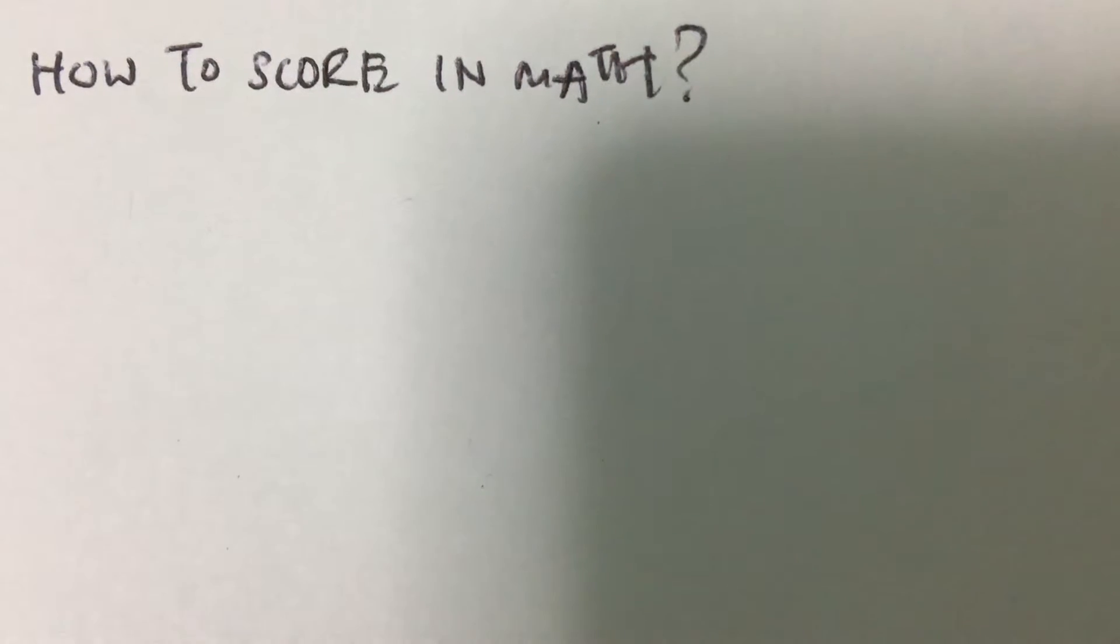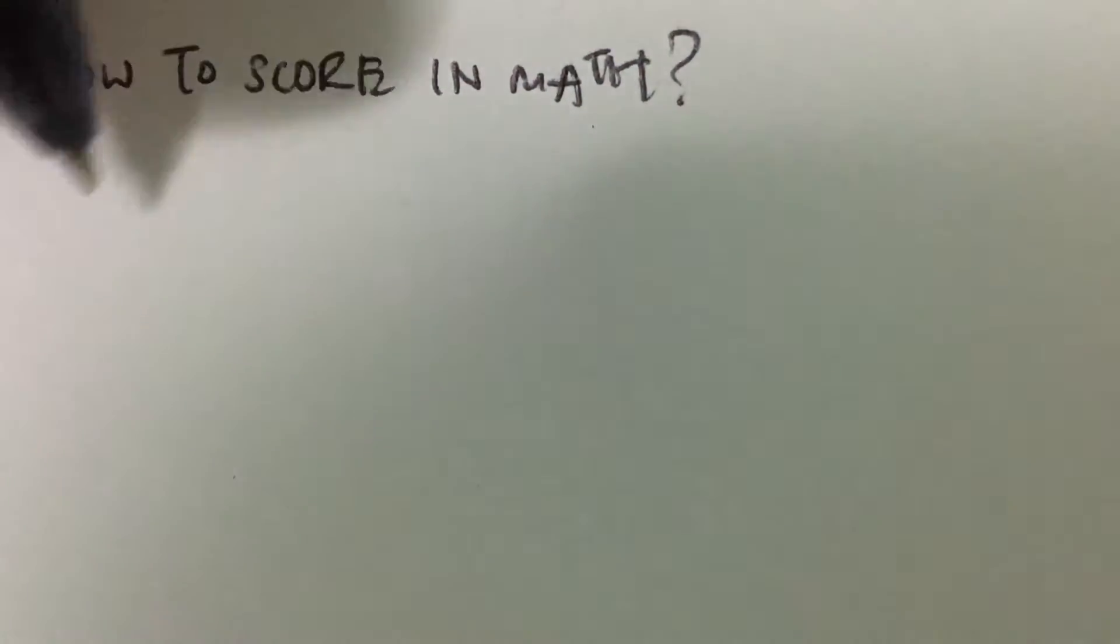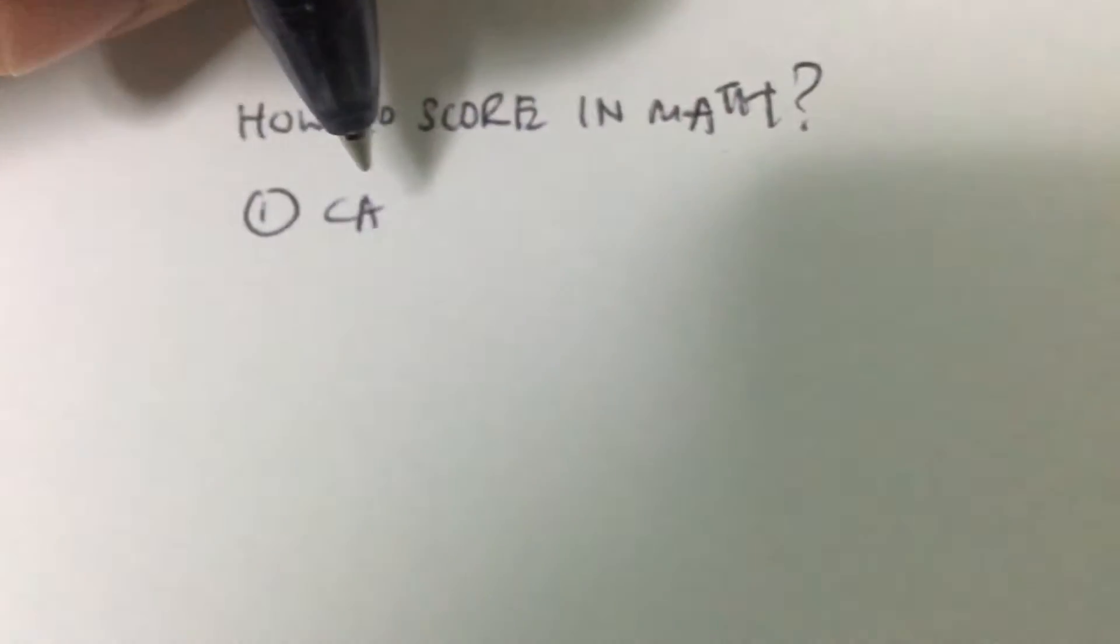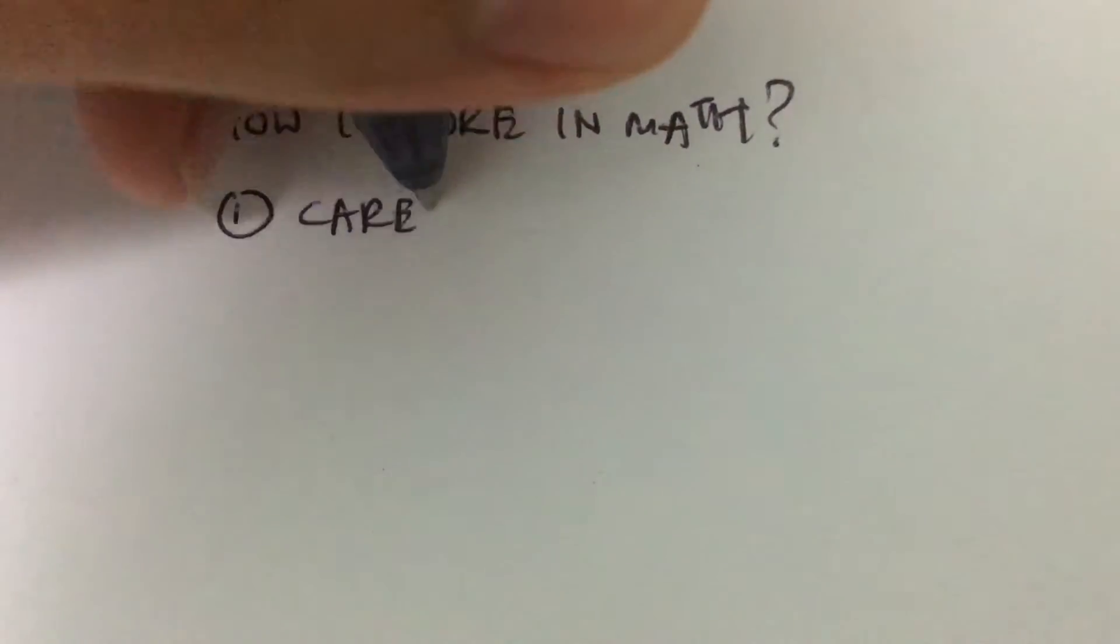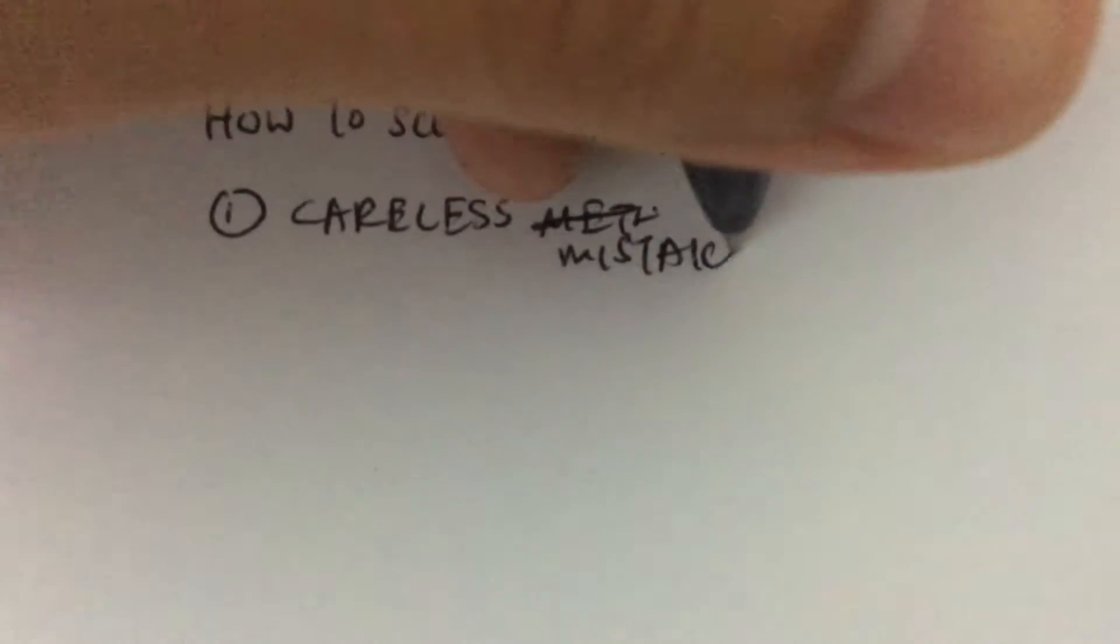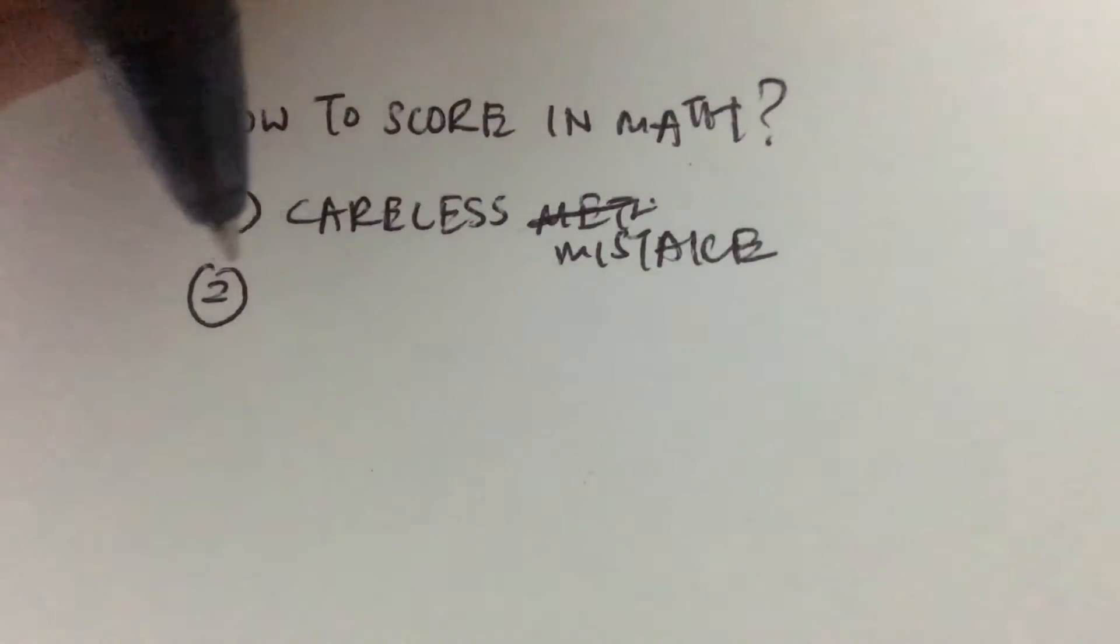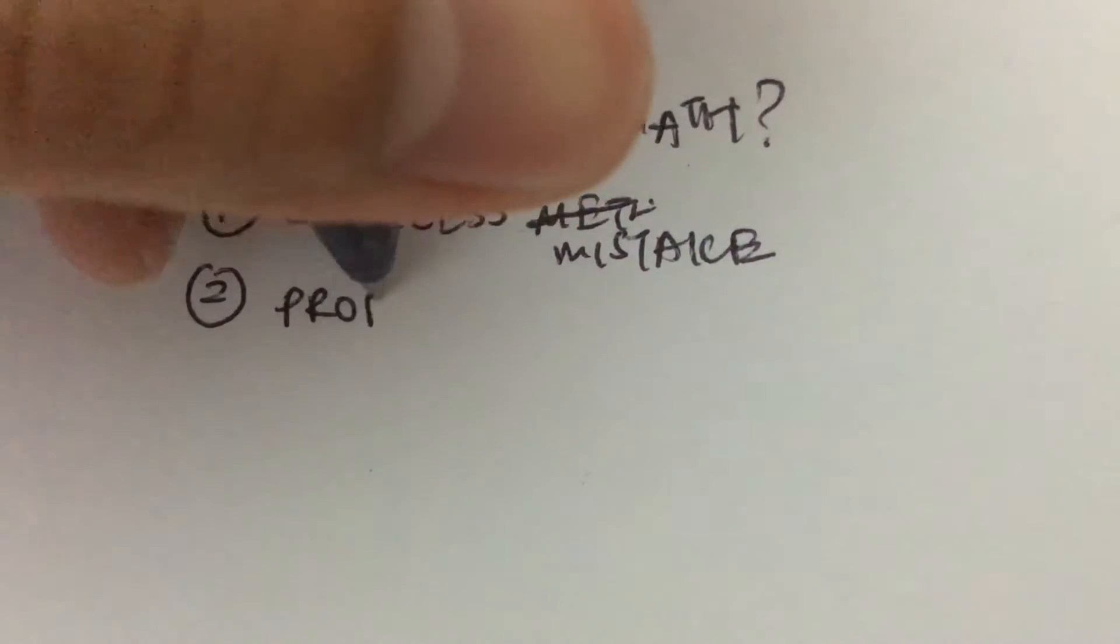In math, basically you have two things: either you make careless mistakes, or you have problems that you do not know how to do.